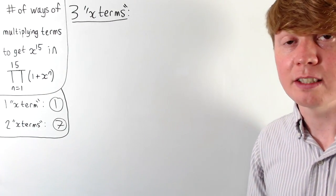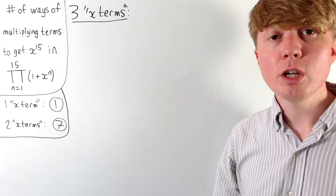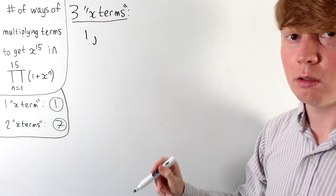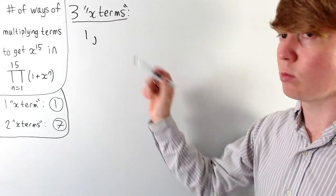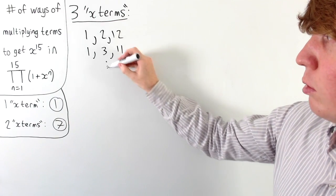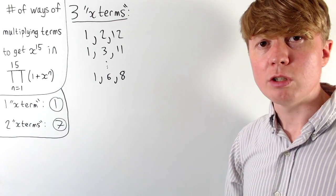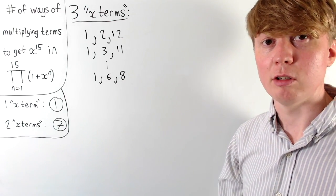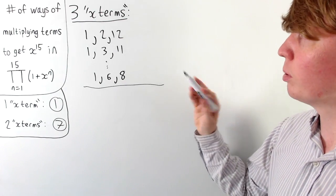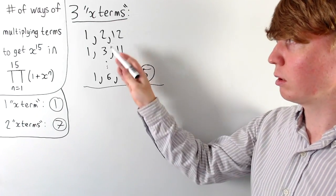Now we'll count the number of ways of multiplying exactly three terms involving x so that we get a power of 15. Starting with those which use x to the power of 1: we need pairs of integers which sum to 14. Our first pair would be 2 and 12, then 3 and 11, keeping going all the way to 6 and 8. We can't use 7 because we'd need another 7, but x to the power of 7 only appears once. So this gives us five different ways of making x to the 15 using three x terms where we include x to the power of 1.